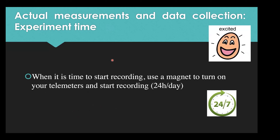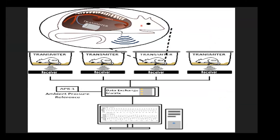Now for data collection — the exciting part. To turn on the implanted transmitter, simply bring a magnet to the rat's abdomen and it activates the transmitter. The rats, housed in their cages and moving freely, have the device body in the peritoneal cavity and the catheter in the aorta. The cages are placed on receivers, which sync to data exchange matrices, transferring data to the computers that process blood pressure values.